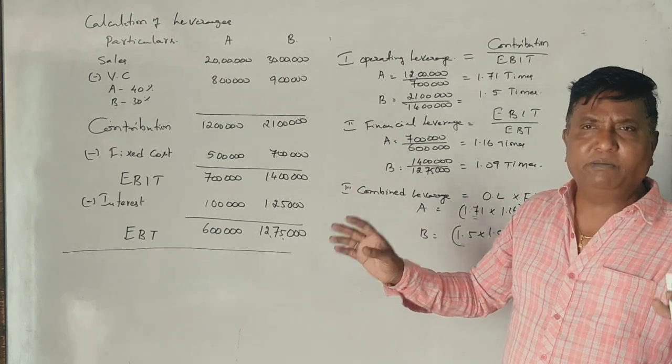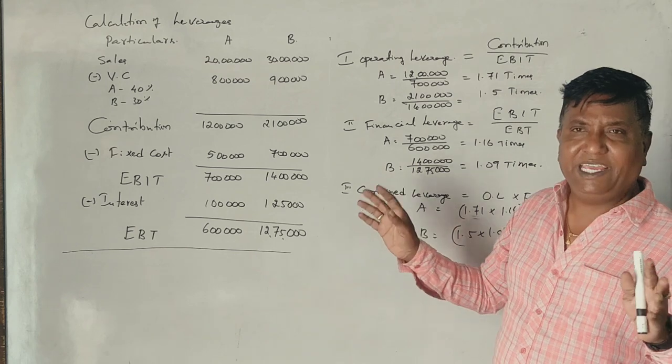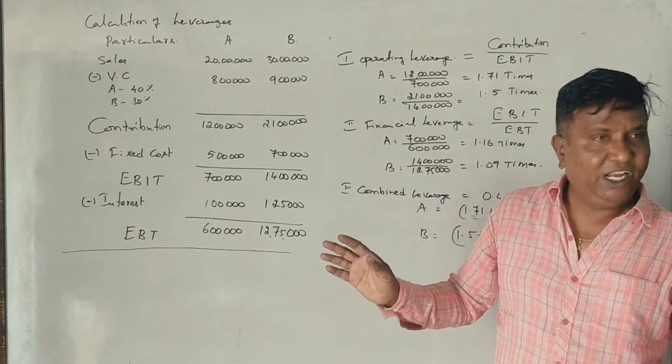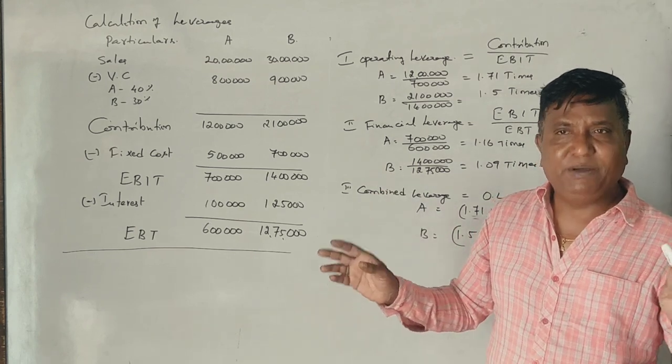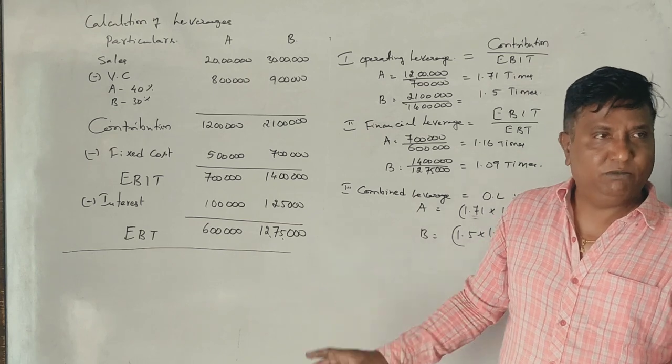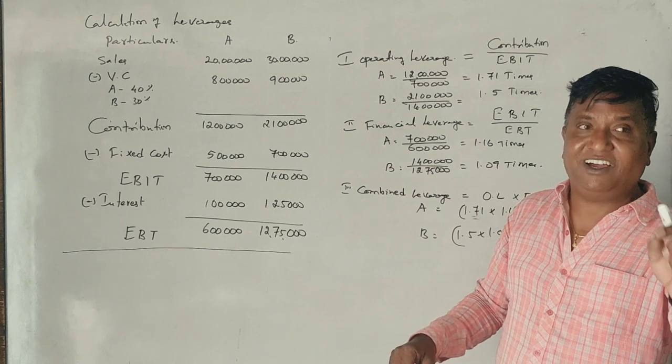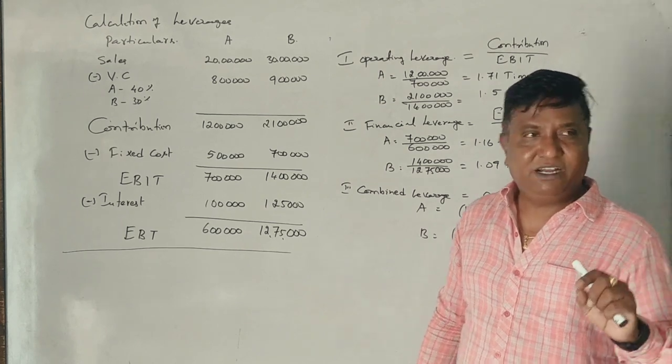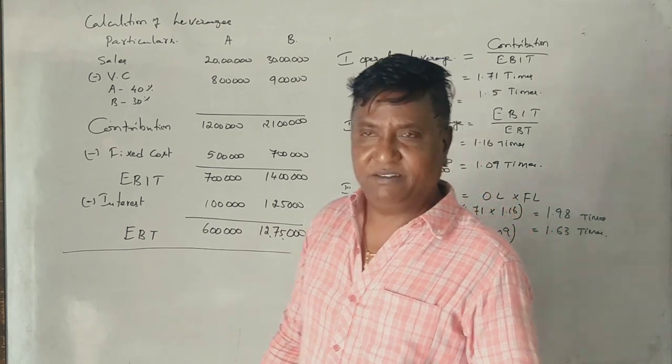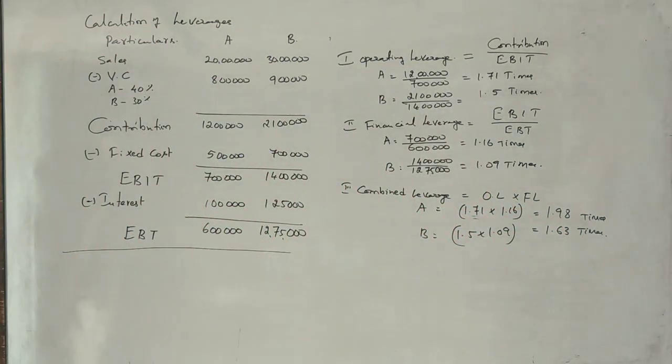Firm B is performing better overall. Firm B is performing well because you can control the variable costs better. Thank you.